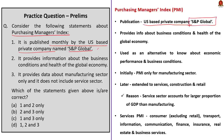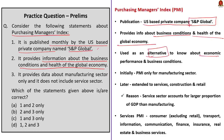Statement 2 says PMI provides information about business conditions and the health of the global economy — this is also correct. PMI is a survey-based economic indicator designed to provide timely insight into business conditions. It is widely used to anticipate changing economic trends in official data such as GDP, and is used by financial and corporate professionals to understand where economies and markets are headed.